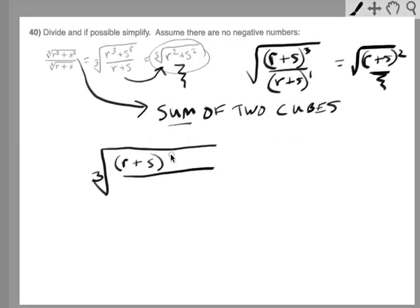Here's the binomial, and here is the trinomial: r squared minus rs plus s squared, and all over r plus s.